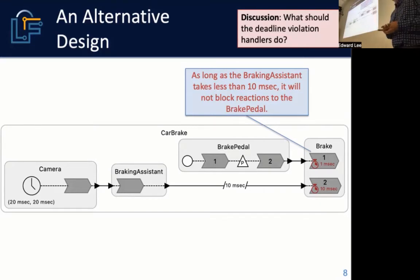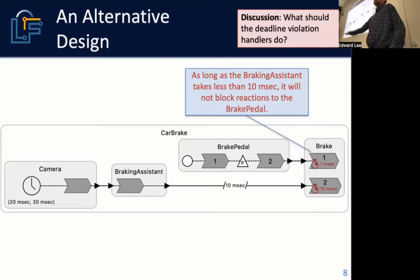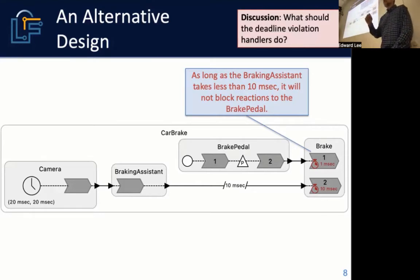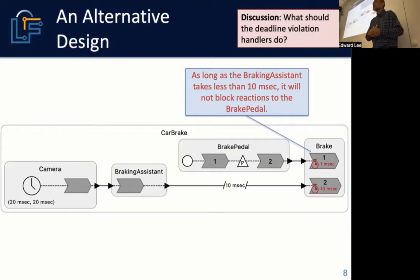What if the braking assistant deadline is violated? That may not be as much of an emergency. The braking assistant operates continuously every 20 milliseconds. The vast majority of the time in normal driving there's no emergency, so a deadline violation here is probably in a situation where there isn't one. Maybe it's sufficient to light up a red light on the dashboard alerting the driver that the emergency braking system is malfunctioning. There's an asymmetry between these deadlines — they really have rather different safety requirements.